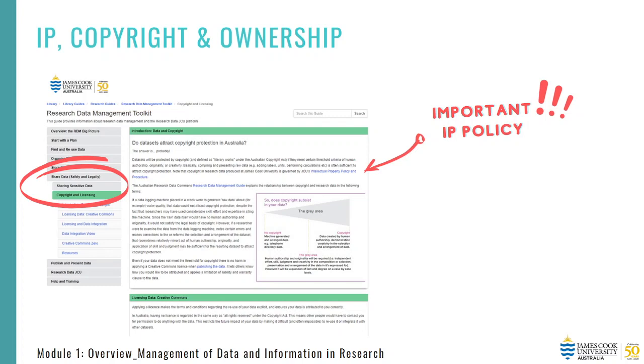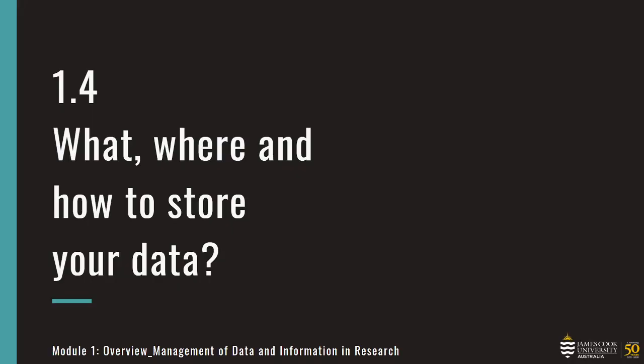There is more information under the copyright and licensing section in the research data management toolkit, but if you're unsure you can always ask the supervisor, the lead investigator, or you can send me an email for further clarification. Now that we've established the importance of your research data and information, it's easy to see it has enormous value as a strategic asset to you as the researcher and to JCU and the broader community. What, where, and how we store this data is therefore an integral component of our research data management practices.